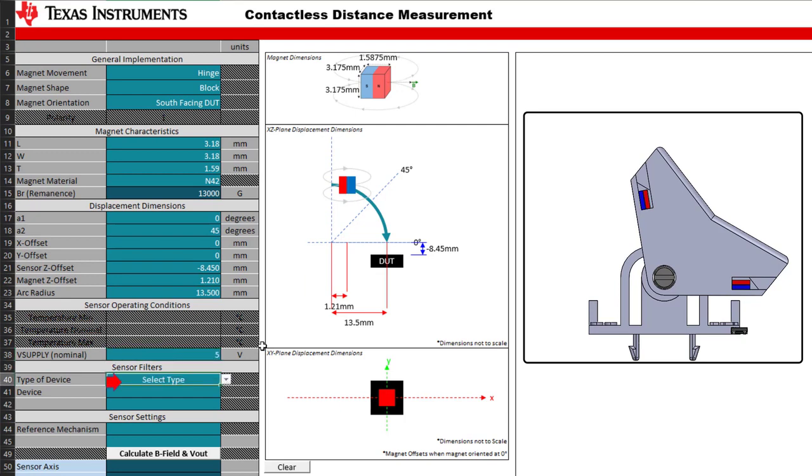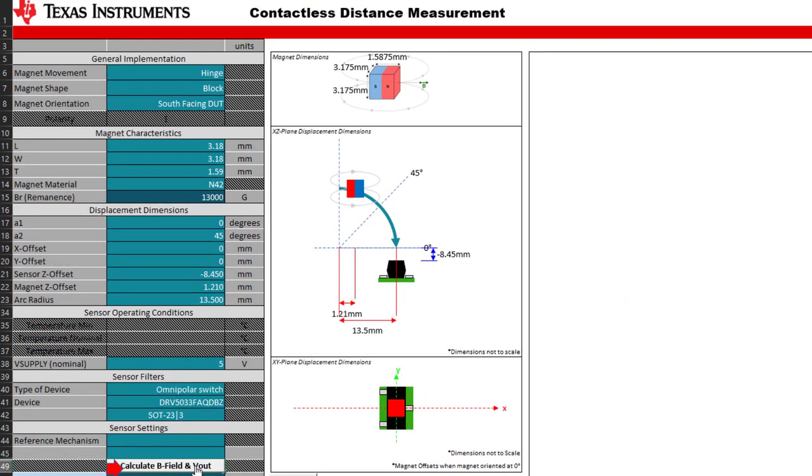Then, we can put in the operating voltage and select a device of interest, in this case, the DRV5033-FAQ-DBZ.